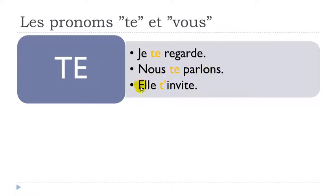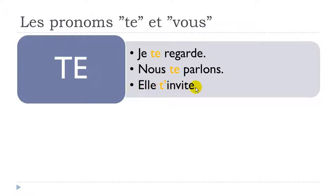And then the last example for te — I chose on purpose the verb inviter, to invite, and if you look carefully, it starts with a vowel, i. And as usual in French, when you get te and then another vowel, basically the e will have to disappear: elle t'invite — she invites you.